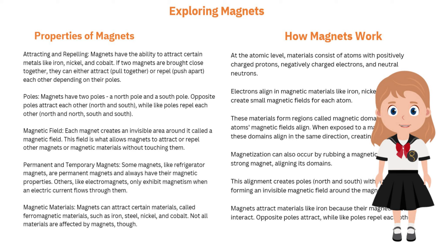At the atomic level, materials consist of atoms with positively charged protons, negatively charged electrons, and neutral neutrons. Electrons align in magnetic materials like iron, nickel, and cobalt to create small magnetic fields for each atom. These materials form regions called magnetic domains, where atoms' magnetic fields align. When exposed to a magnetic field, these domains align in the same direction, creating magnetization.